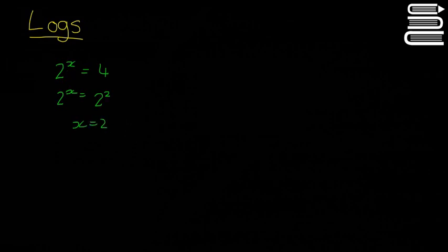So that's all well and good, but what if we have a harder question? If we have something like 2 to the power of x is equal to 17, so 2 squared is equal to 4, 2 cubed is equal to 8, 2 to the power of 4 is equal to 16, and 2 to the power of 5 is equal to 32, so it's going to be somewhere in between these two.